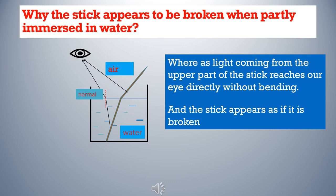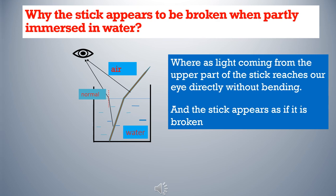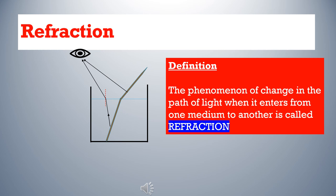Whereas light coming from the upper part of the stick reaches our eye directly without bending, and the stick appears as if it is broken. The phenomenon of change in the path of light when it enters from one medium to another is called refraction.